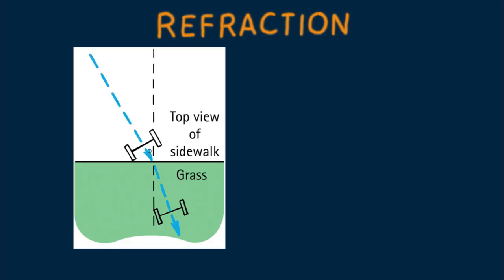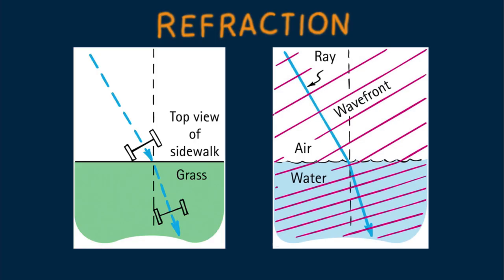If you roll a pair of cartwheels down a slight incline from sidewalk to grass, the wheels roll slower on the grass than on the sidewalk. Why? There is more interaction of wheel surfaces with grass than with the smoother sidewalk. If you roll the wheels at an angle, so one wheel meets the grass while the other is still on the sidewalk, the wheels will swivel from their straight line path. Due to the change in speed, the direction of travel changes. Likewise with light.